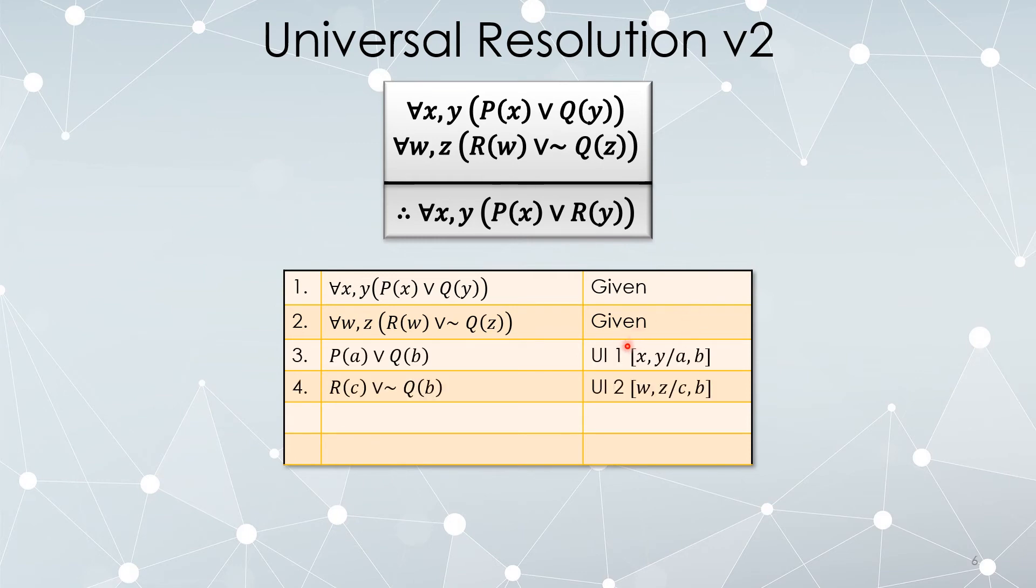Now we're going to universally instantiate both of them. But look at the variables. We have statements P, Q, R, not Q. So when I do the universal instantiation, we're probably going to want to use the same variable for Q in both of these. And that's what we're doing. Okay, we're replacing X with A and Y with B to get P of A or Q of B. Then we're instantiating W and Z with C and B respectively. Specifically, we want the same variable B here.